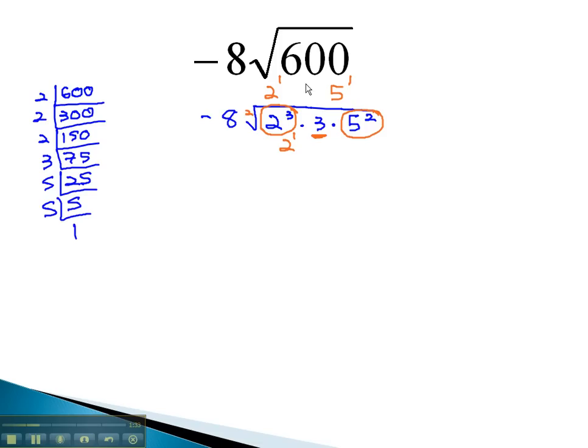To finish this problem now, we can multiply not just the 2 times the 5, but also times the negative 8 out front. Negative 8 times 2 times 5 is negative 80. Left inside the square root is a 2 and a 3, which multiply to 6.